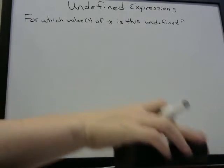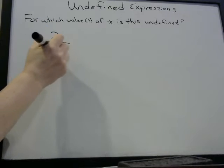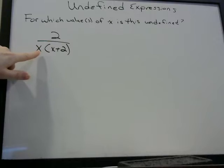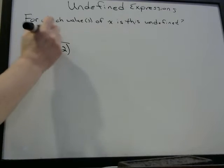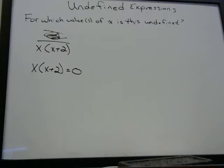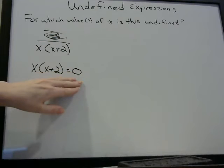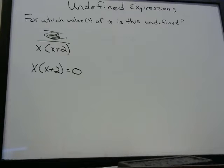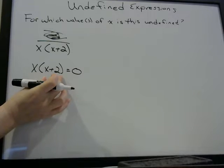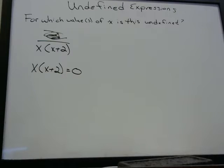Now a slightly more complicated example — watch the algebra playlist videos on polynomials. When we have two things side by side, that means multiplication: x times (x + 2). Again we don't care about the numerator. When does x times (x + 2) equal zero? You can multiply it out and use the quadratic formula, or think logically: when you multiply two things together to get zero, one of them has to equal zero.